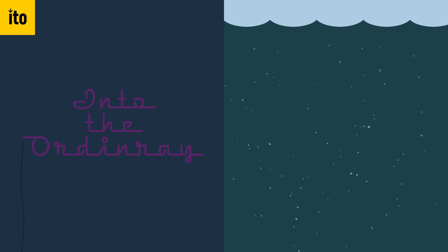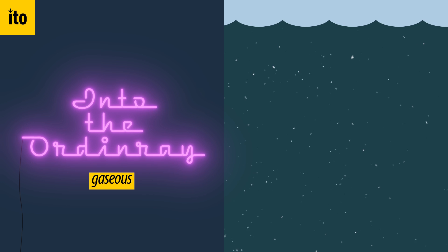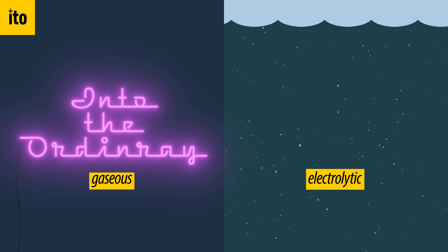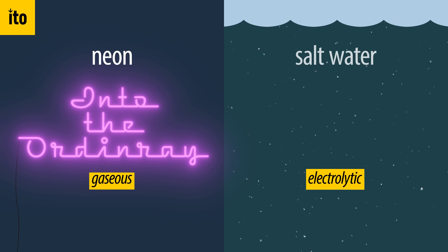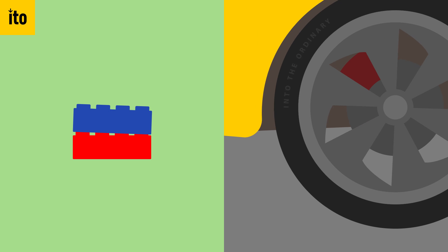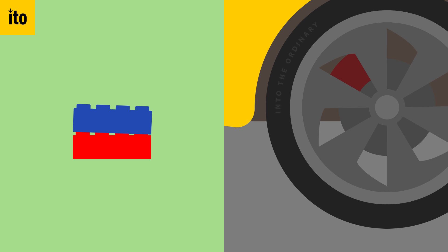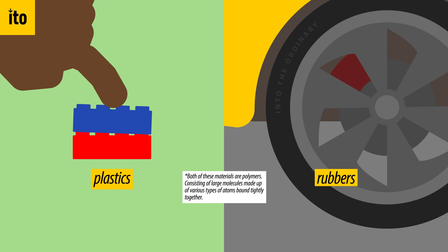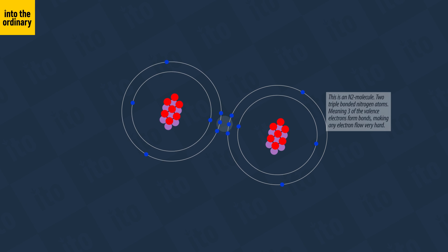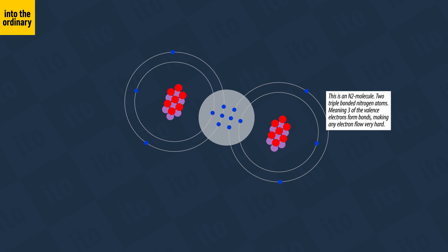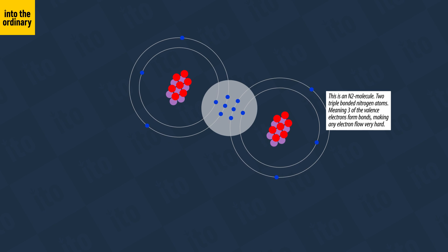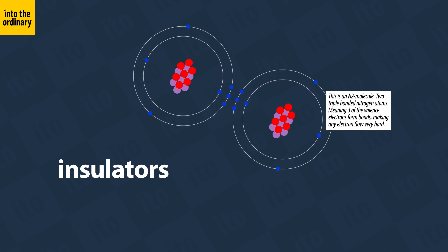They don't have to be solid. They can also be a gas, or so-called electrolytic conductors — think of neon and salt water, for example. Whereas other materials, such as plastics or rubbers, have tightly bound electrons. This makes the flow of electrons within these materials difficult. Materials with this property are called insulators.